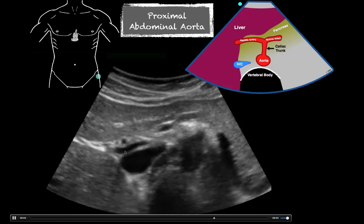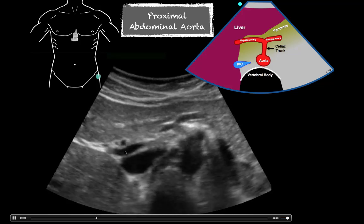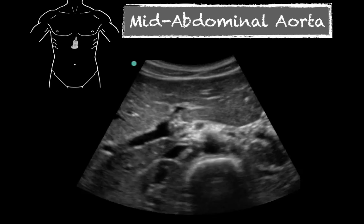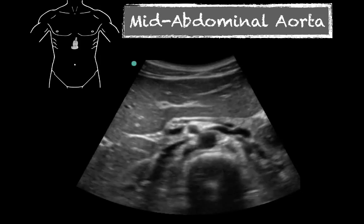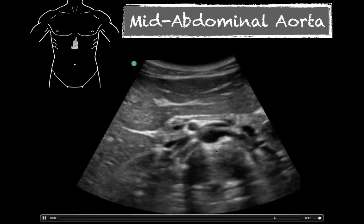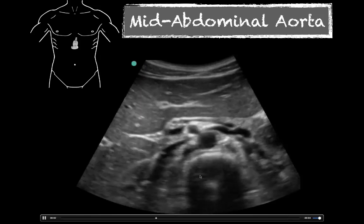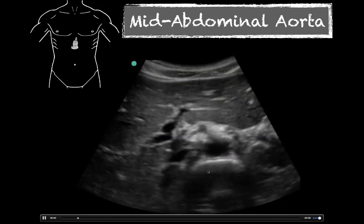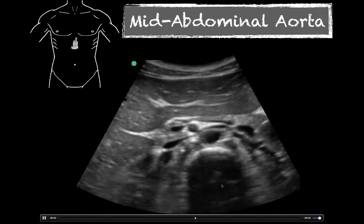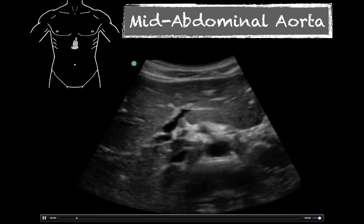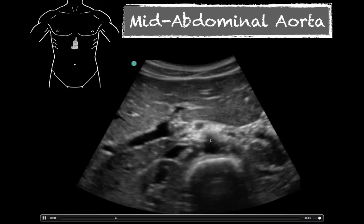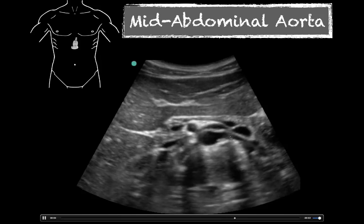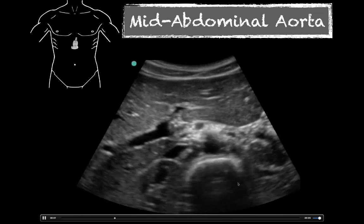The proximal and mid abdominal aorta transition happens quickly as you drag down, because you're going to hit the renal arteries. By definition the mid aorta is from the SMA down to the renal arteries. Here once again we have our vertebral body. You'll see a space because you're looking through an intervertebral disc — don't let that confuse you. Here's our aorta sitting right on top. Here's our SMA, and you can see that little branch coming off. Then we've got some vessels coming across, so let's look at that anatomy.